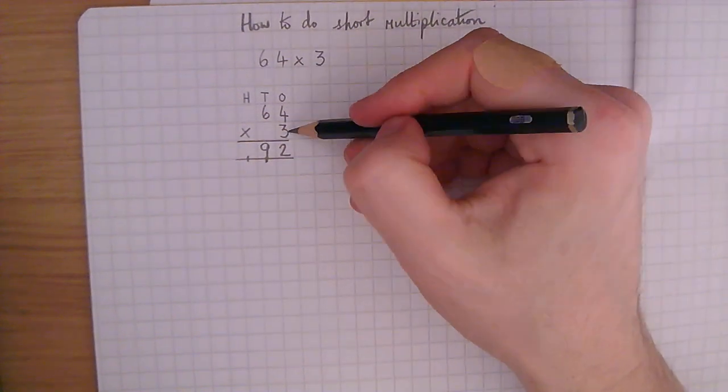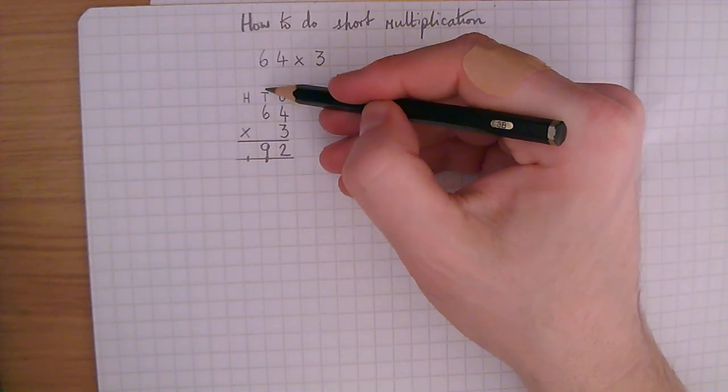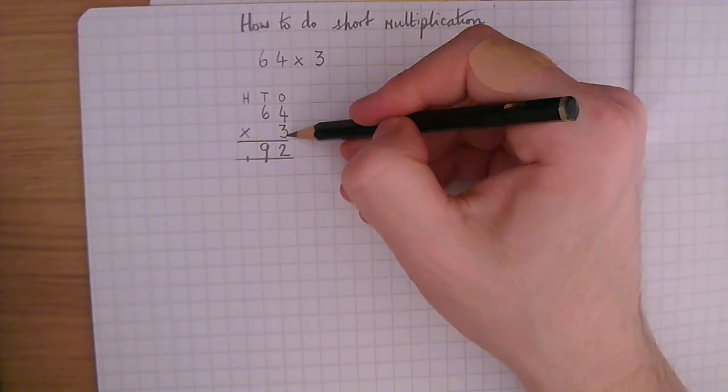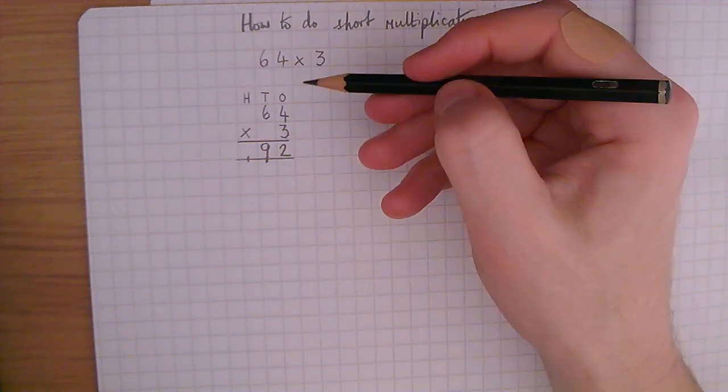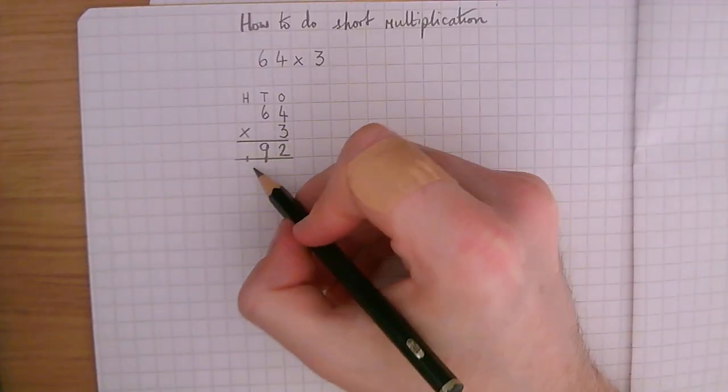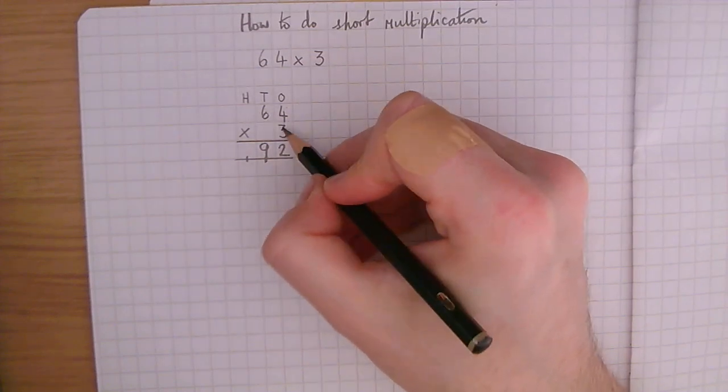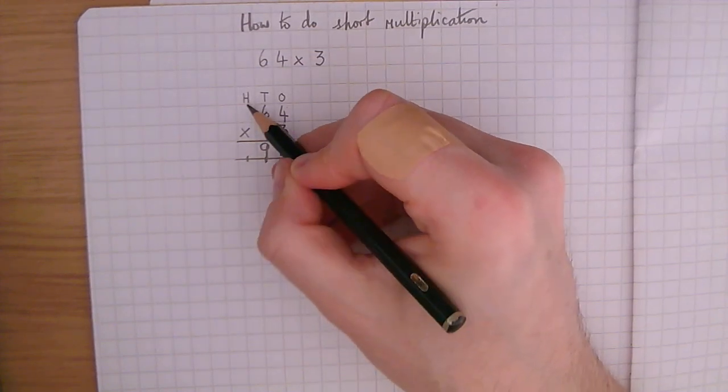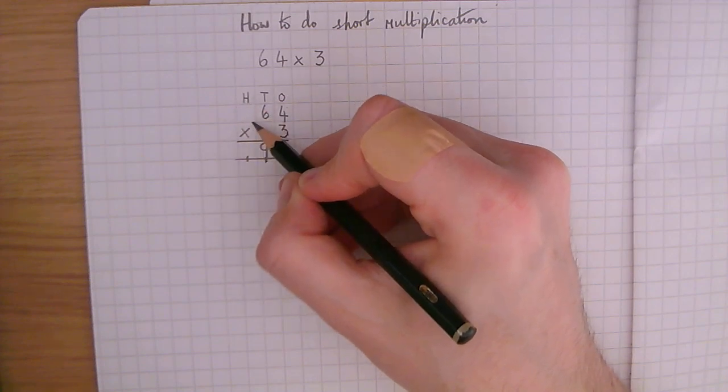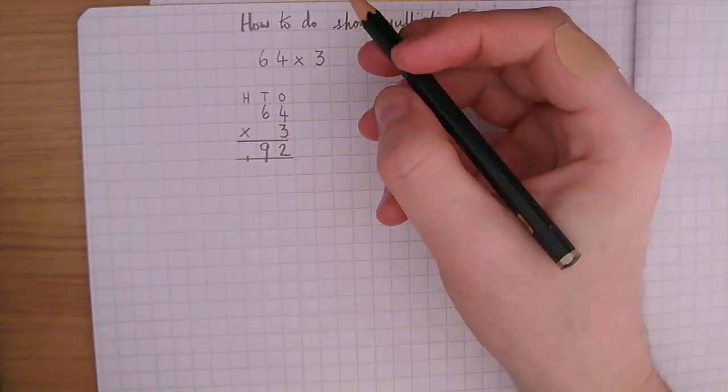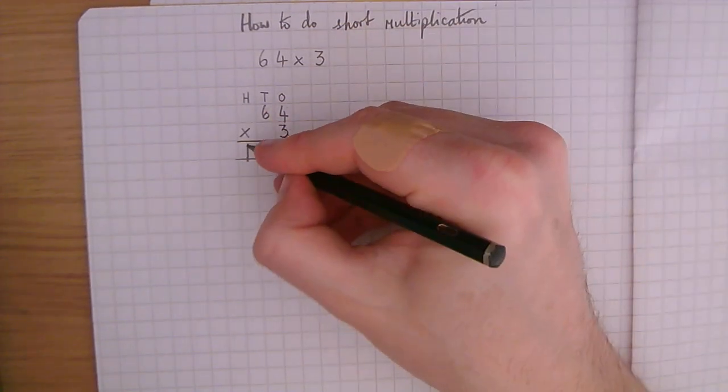Remember, it's really 3 times 6 tens. But for the method, we can just say 3 times 6. So 3 times 6 is 18, and the 1 is 19. Then there's nothing else left to multiply 3 by. So the 1 just goes there. So that's the first example.